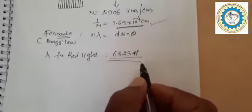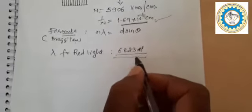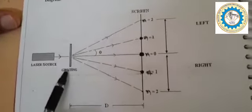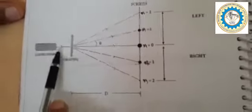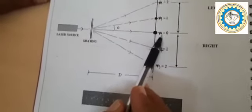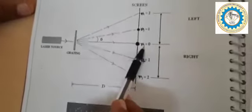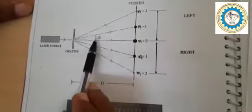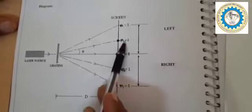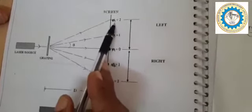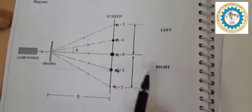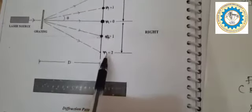For red light, the standard value for the wavelength of a red light laser is 6823 angstroms. In the actual experiment, there is a laser source and a diffraction grating. The straight-through line is n equals 0. The deviated line with angle theta is n1, which is the first order, and n2 is the second order. On the other side also, n1 is the first order and n2 is the second order.